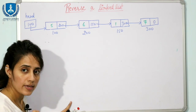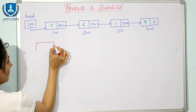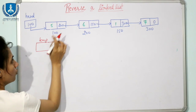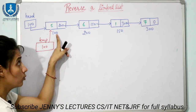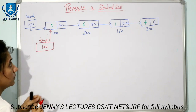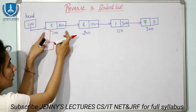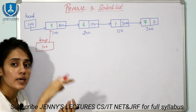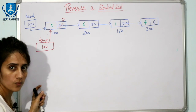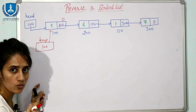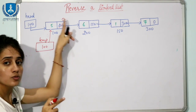We have already discussed traversal in previous videos using a temp pointer. So I'll take a temp pointer — a pointer to node — starting at head, so temp contains 100. For reversing, this first node should contain the address of its previous node, but there is no previous node, so previous node is null. We store null here: temp->next equals zero, or equivalently, temp->next equals previous node.